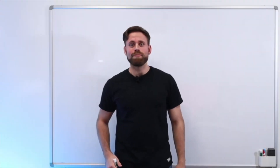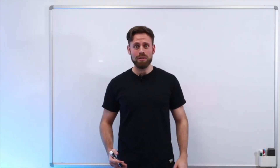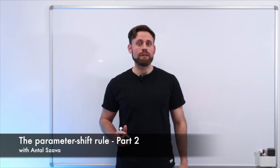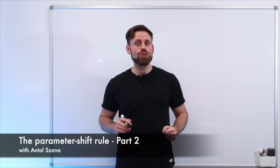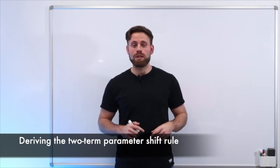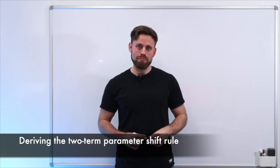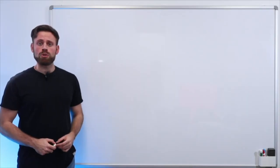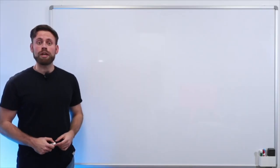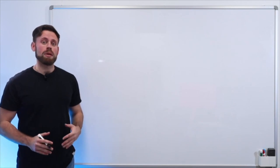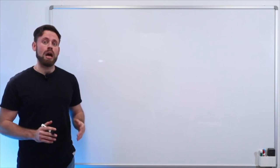Hi everyone, welcome. My name is Anton and in this video I would like to have a look at how the two-term parameter-shift rule can be derived using the Fourier representation of an expectation value. Let's jump right into it. If you are not familiar with parameter-shift rules, I recommend that you check out our video on how quantum gradients can be computed on hardware.